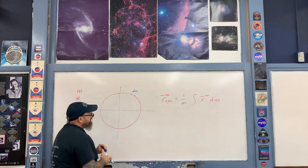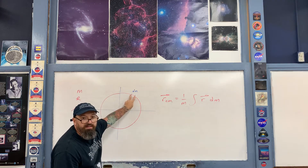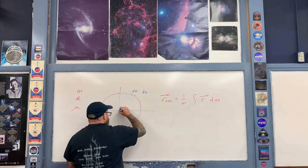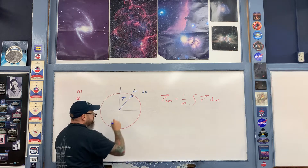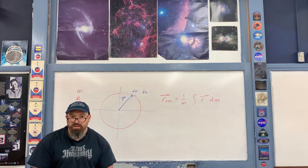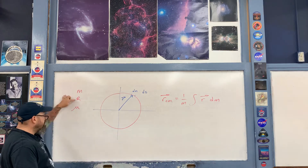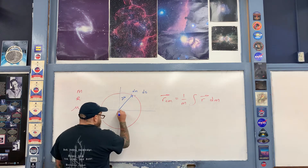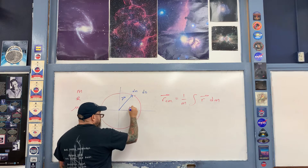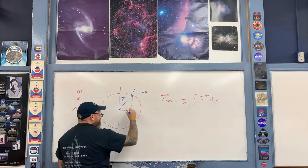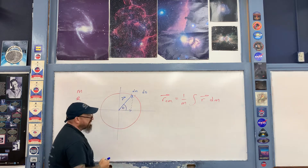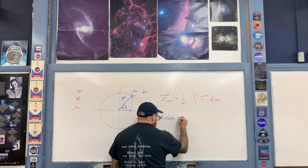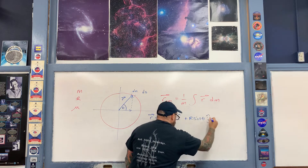Now, how do we write the position vector? Its magnitude is capital R, which is just the radius of the circle. Using that, I can visualize the components: the x-component in the i-hat direction and the y-component in the j-hat direction. Defining an angle theta, I can write the position vector r as R cosine θ î plus R sine θ ĵ.